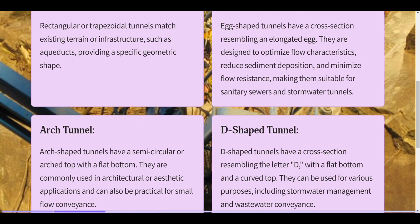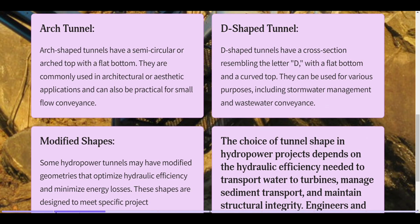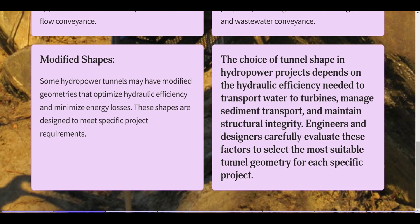Arch-shaped tunnels have a semicircular or arched top with a flat bottom, commonly used in architectural or aesthetic applications and for small flow conveyance. D-shaped tunnels have a flat bottom and a curved top, used for stormwater management and wastewater conveyance. Modified shapes optimize hydraulic efficiency and minimize energy losses. The choice of tunnel shape depends on hydraulic efficiency, sediment transport, and structural integrity.